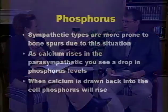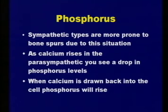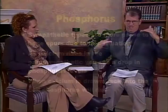Sympathetic types are also more prone to bone spurs because of calcium depositing—calcium phosphate. As calcium gets higher in the parasympathetic, you see a drop in phosphorus levels, and when calcium is drawn back into the cell, phosphorus will rise. They're kind of like on a teeter-totter, all controlled by the parathyroid hormone. If your parathyroid hormones are really out of balance or you've had the parathyroid removed, you'll constantly struggle, so it's really important to watch your acid-alkaline levels to know how you're metabolizing things.